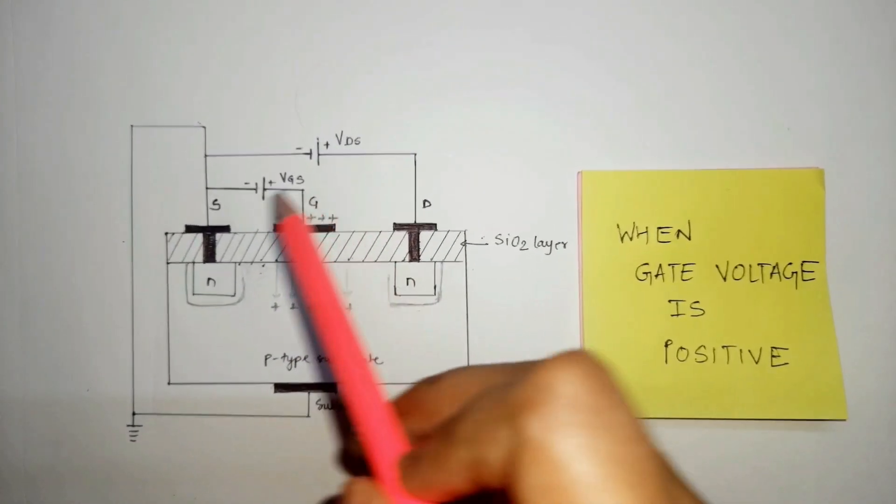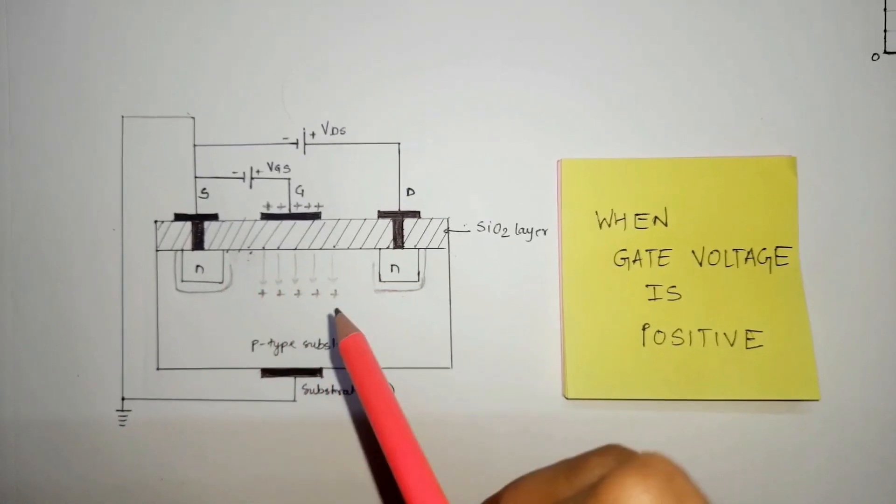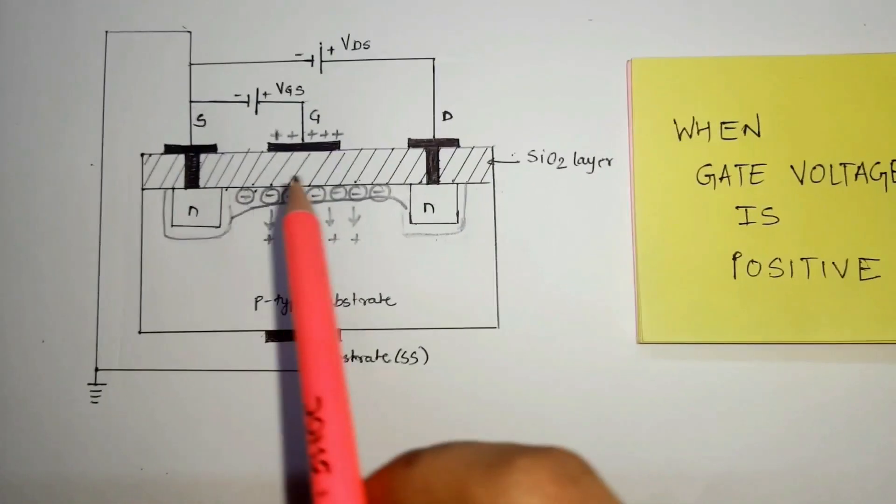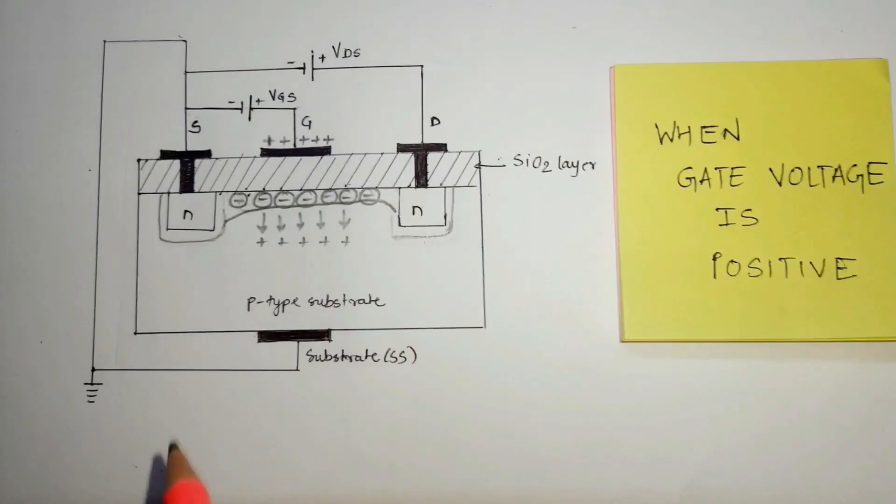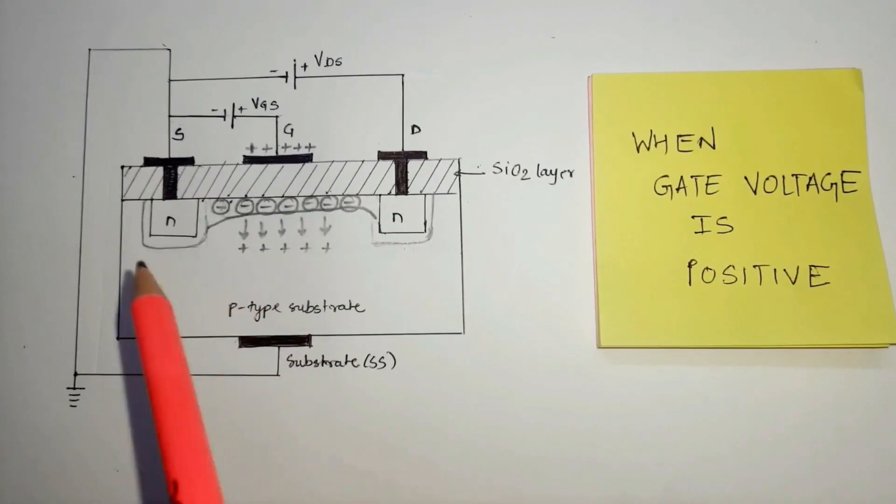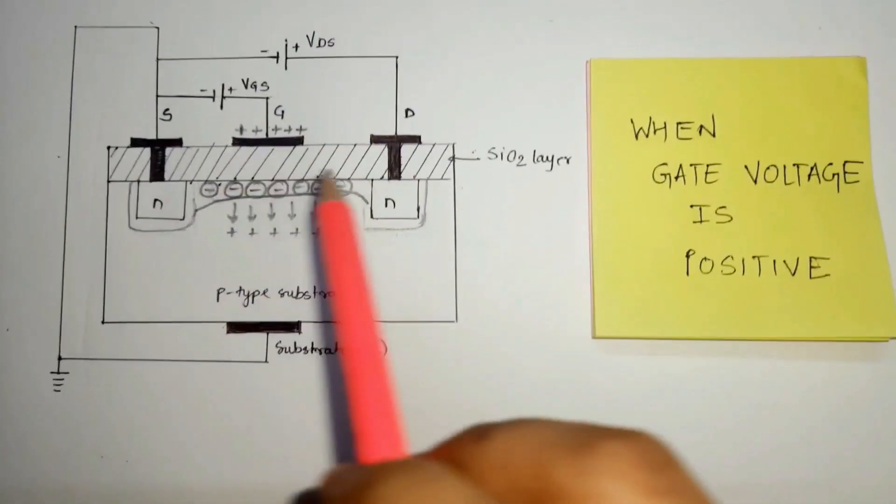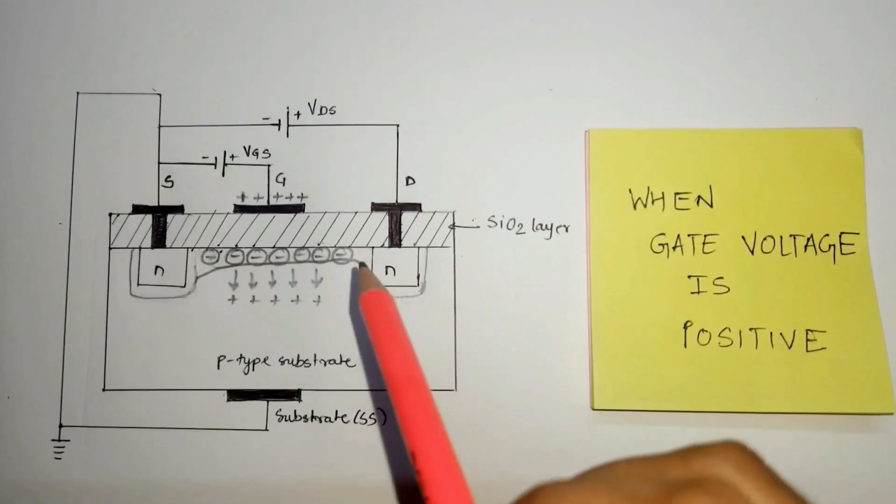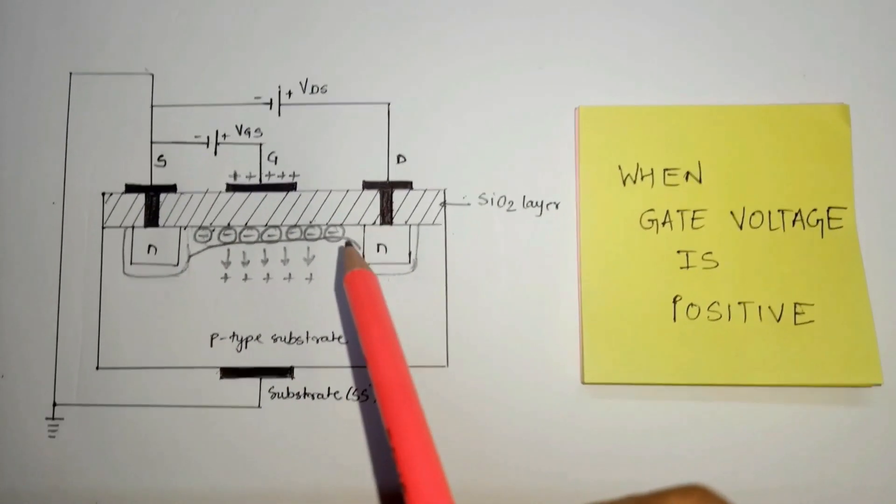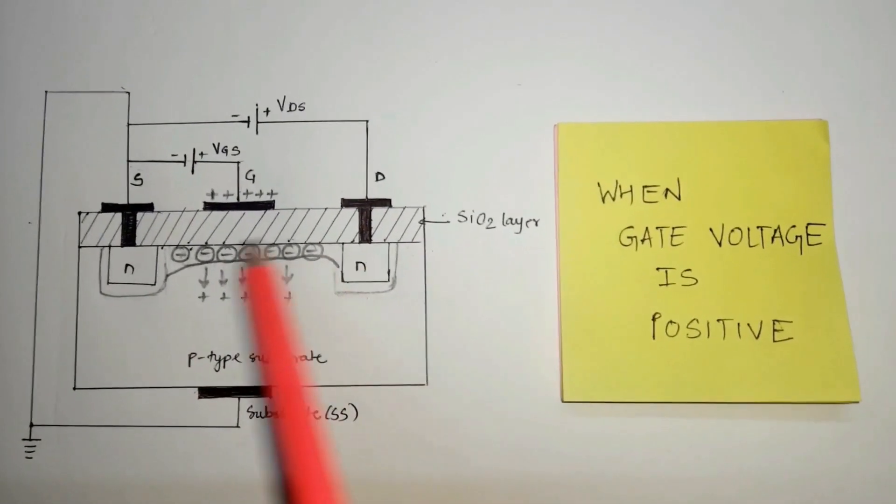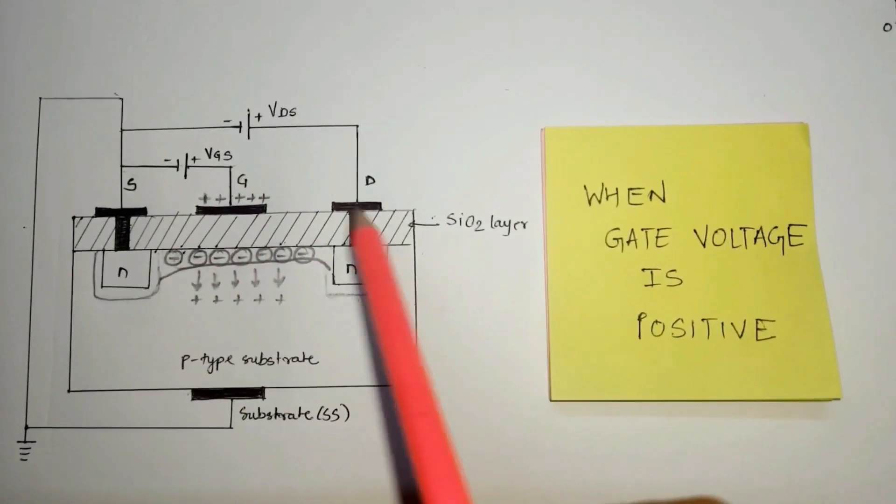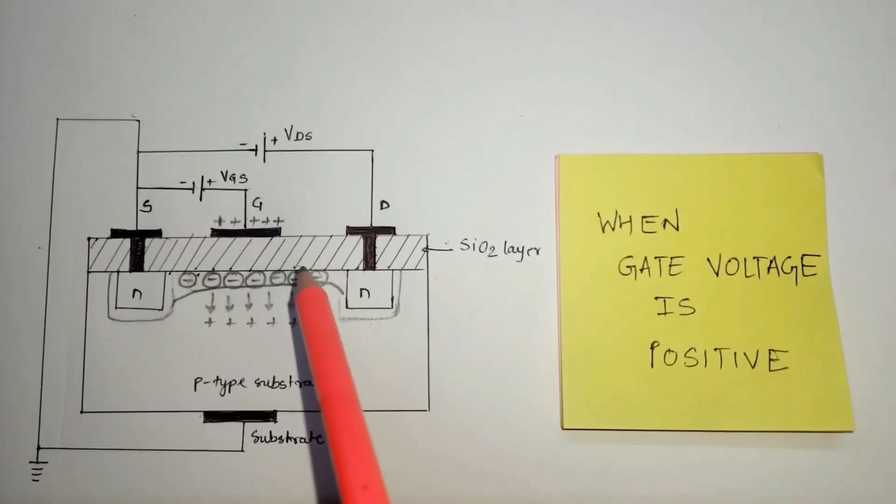This positive potential at the gate terminal will repel the holes present in the P-type substrate. This results in the creation of depletion region near the oxide layer. But the minority carriers, that is the electrons in the P-type substrate, will be attracted towards the positive gate terminal and gather near the surface of SiO2 due to the field effect offered by the gate terminal. As we increase the positive gate voltage, the number of electrons gathering near the SiO2 layer will increase. The electron concentration increases to such an extent that it creates an induced N-channel which connects the two N-doped regions. The drain current then starts flowing through this induced channel from source to drain. The value of gate voltage at which this conduction begins is called threshold voltage and it is denoted by VTH.